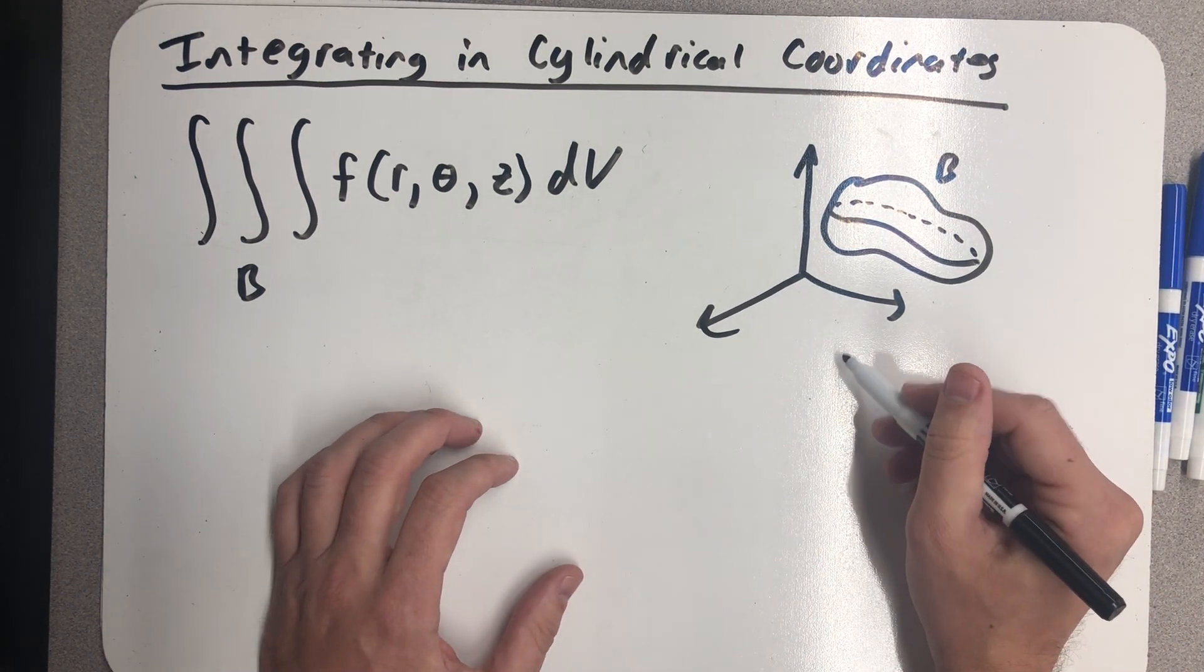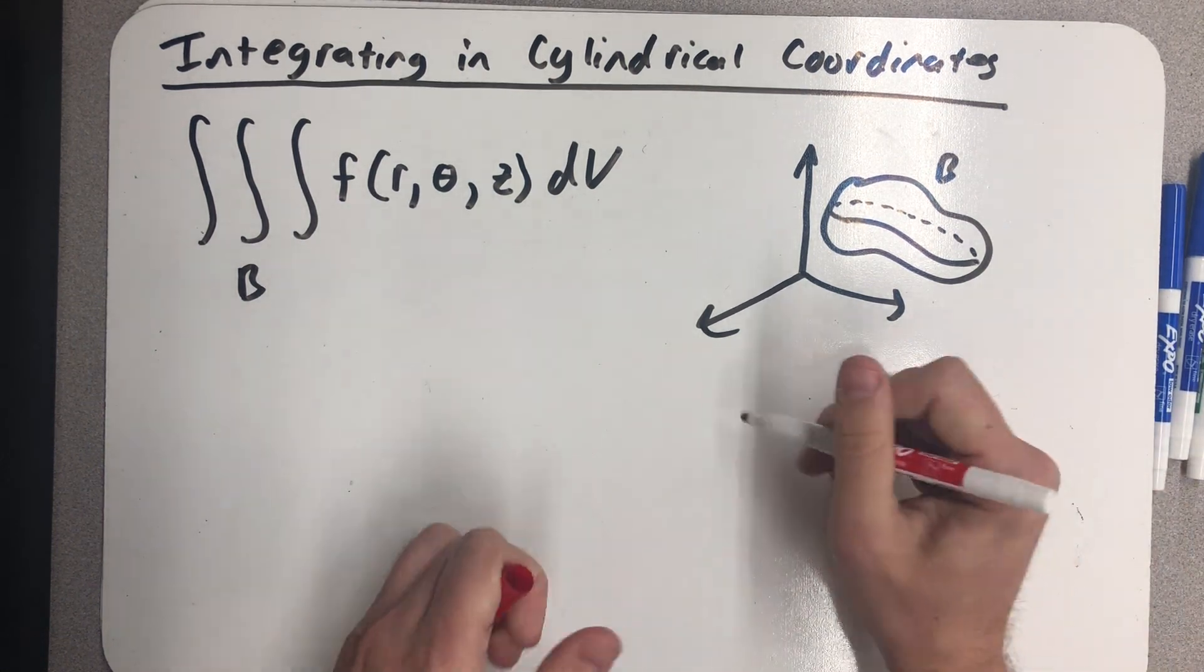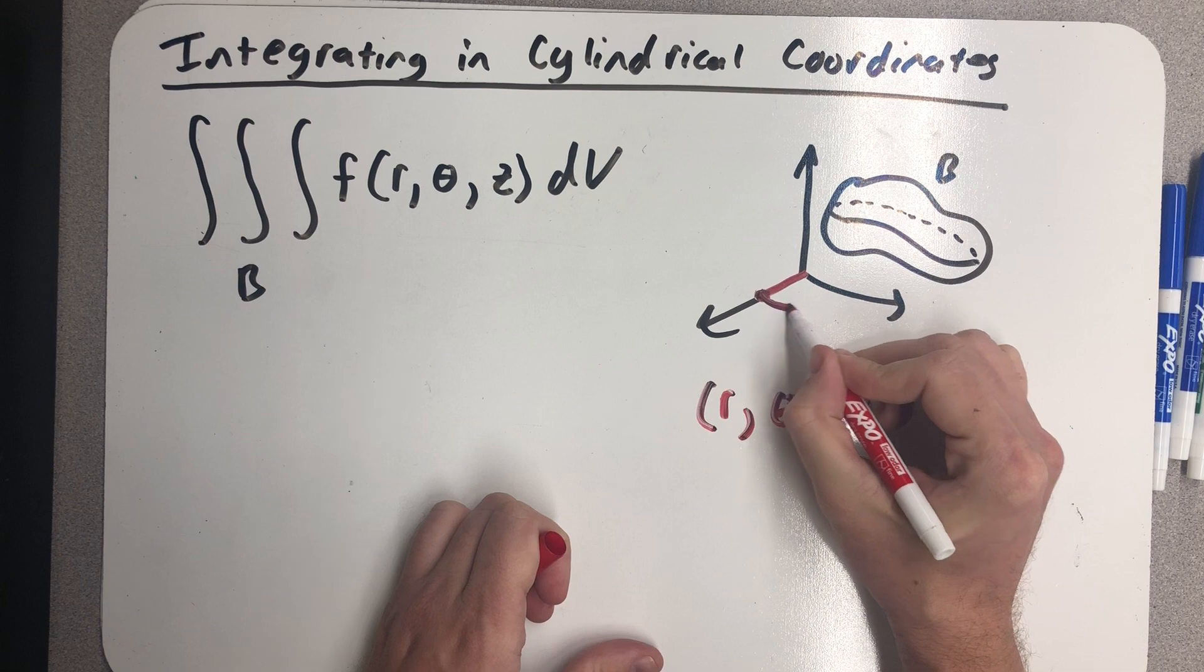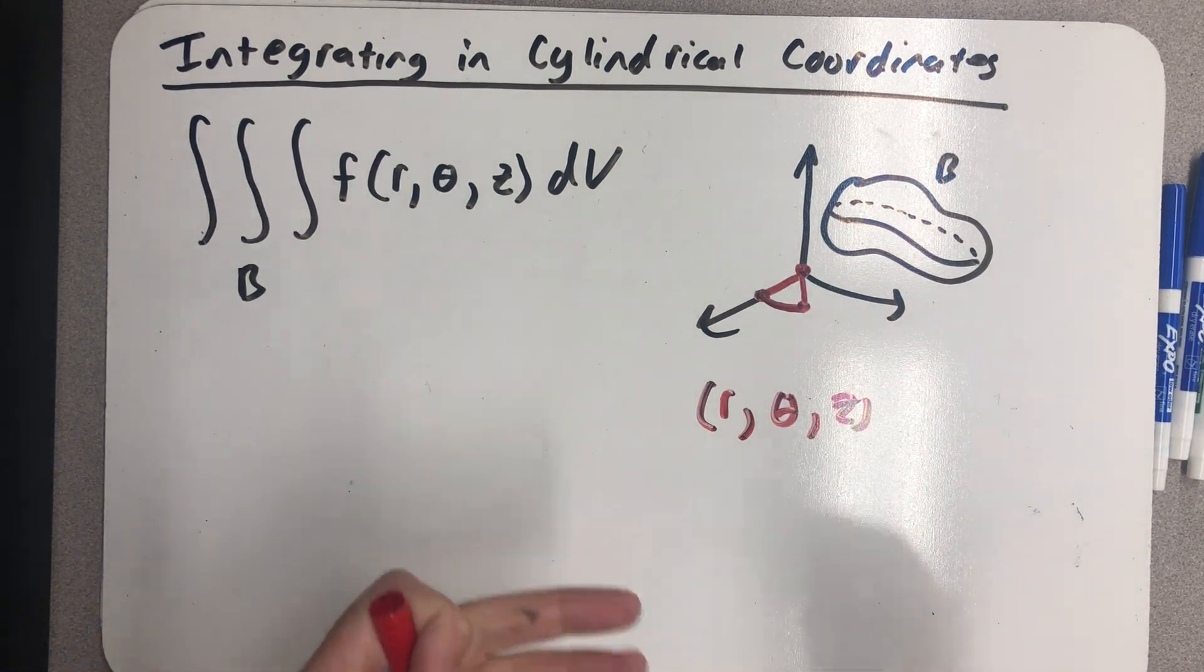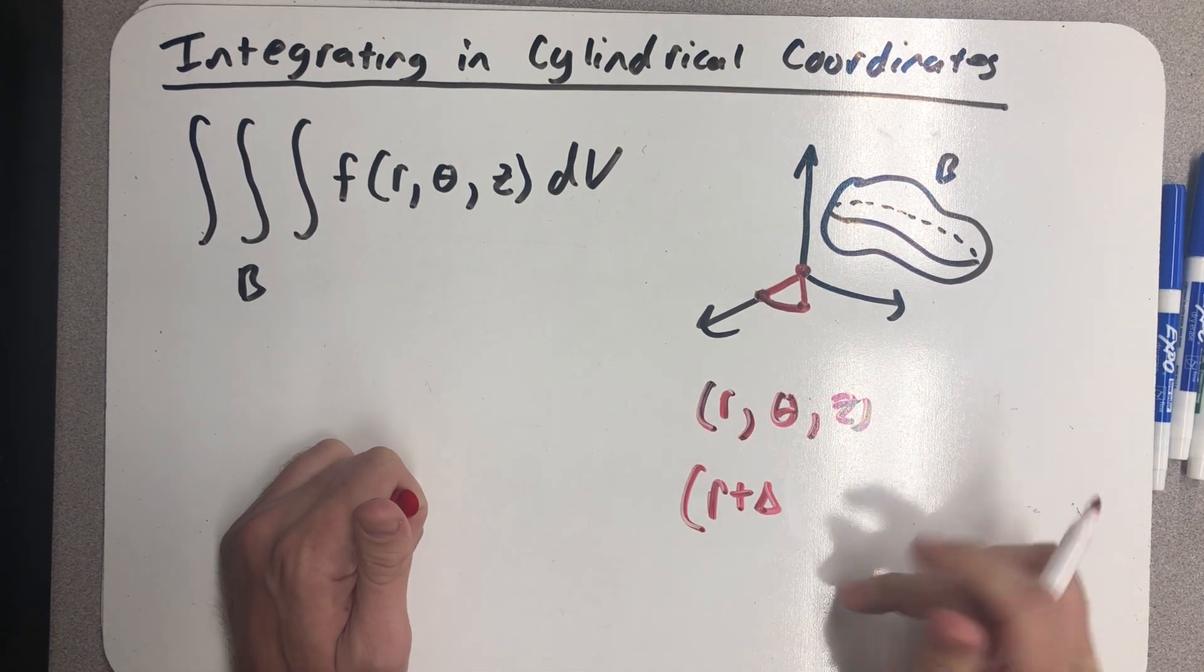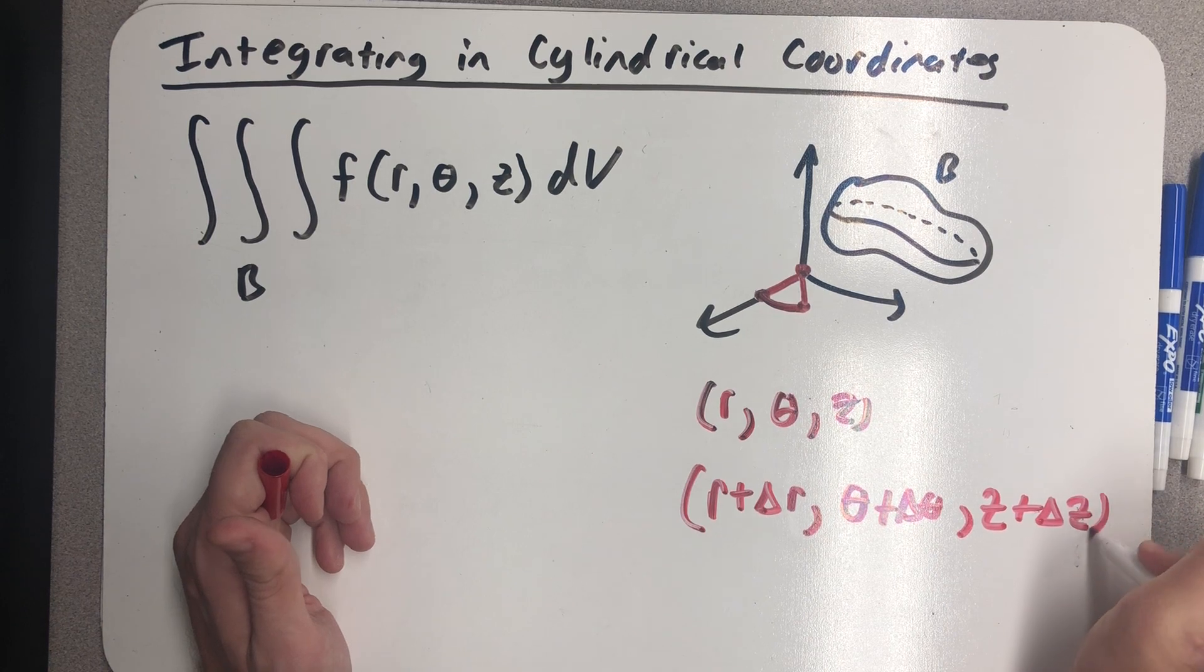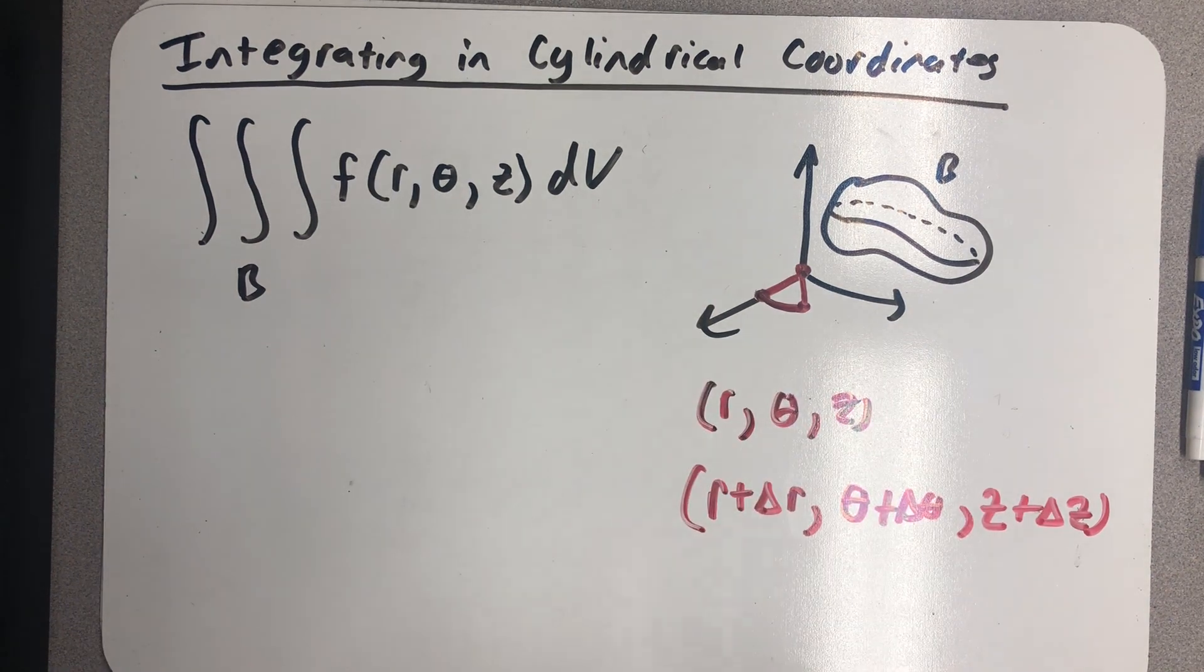Let's imagine that we start at a point (r, θ, z). So r, something like that, theta, and you go up, and there's z—that's the point we start with. Now let's imagine we increment just a little bit to where we're looking at this point: r plus some Δr, θ plus some Δθ, and z plus some Δz, and see if we can imagine the region we trace out.